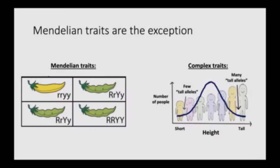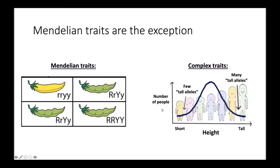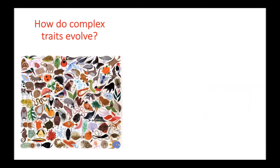These complex traits can interact with each other and with the environment in very complex ways. Understanding the evolution of these complex traits is a major question driving the research in my lab — how it is that these complex traits evolve to give rise to all this incredible biodiversity that we see on Earth.